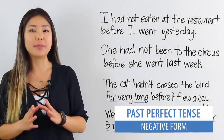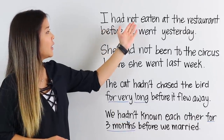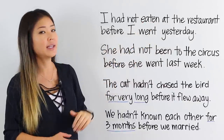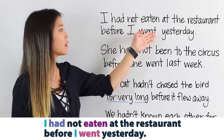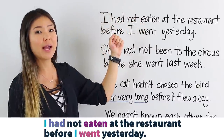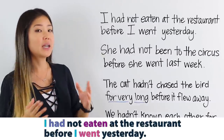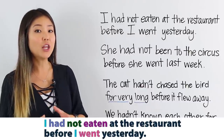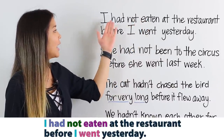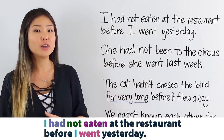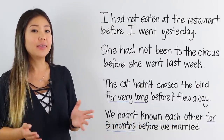Now I'll introduce how to form the negative in the past perfect tense. The first sentence says: 'I had not eaten at the restaurant before I went yesterday.' We have the past perfect tense and the past simple tense. The past perfect is the action that happened earlier, and the past simple is the action that happened later. Because this is the negative, I add 'not' between 'had' and the past participle of the verb. So I say 'I had not eaten,' or using the contraction: 'I hadn't eaten at the restaurant before I went yesterday.'